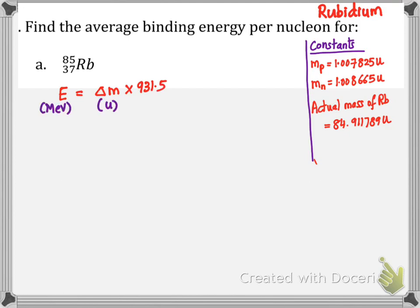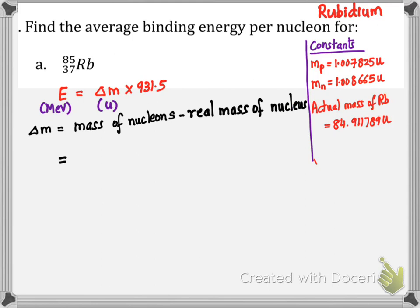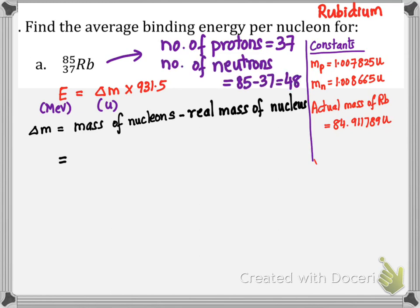We use the formula E equals delta m multiplied by 931.5 since mass defect is in unified mass units here. Mass defect equals mass of the nucleons minus real mass of the nucleus. The number of protons equals the atomic number, which is 37. The number of neutrons equals mass number minus atomic number: 85 minus 37 equals 48.